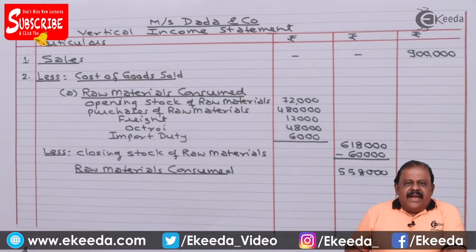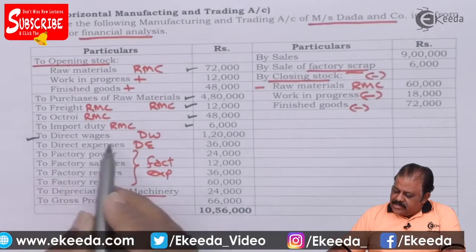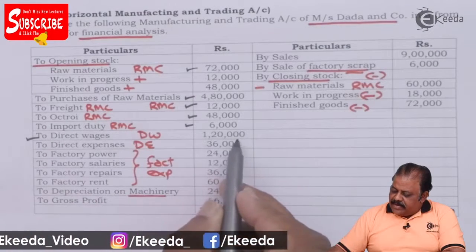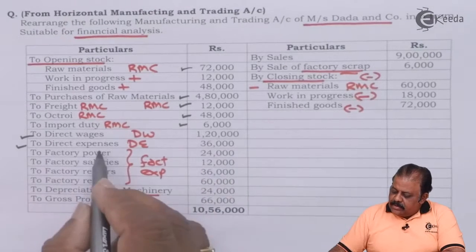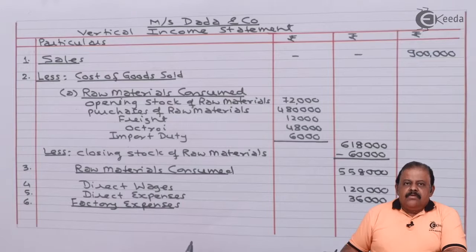To raw material consumed we will be adding other direct costs: direct wages 1,20,000 and direct expenses 36,000.